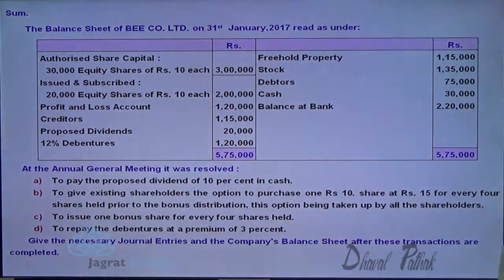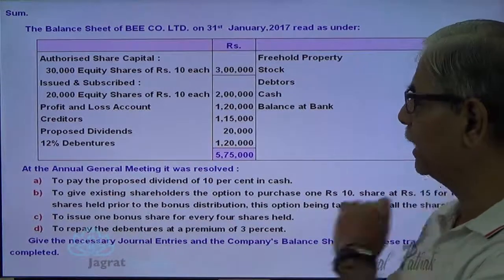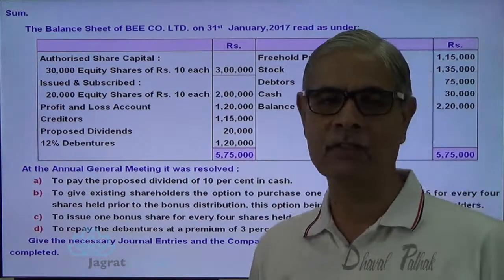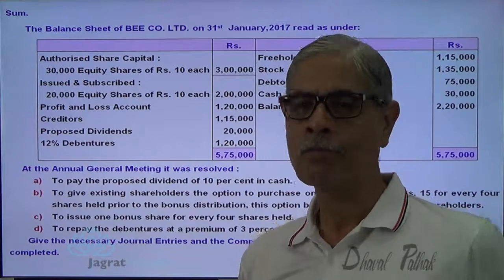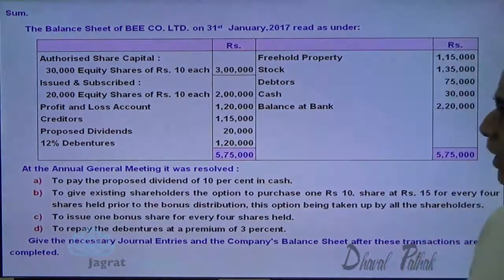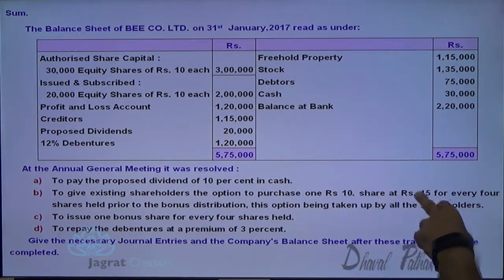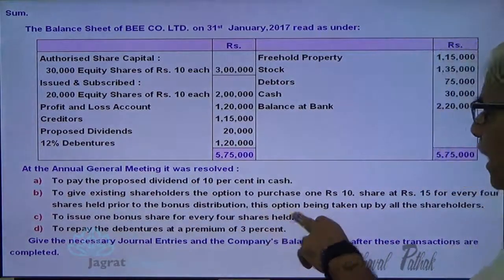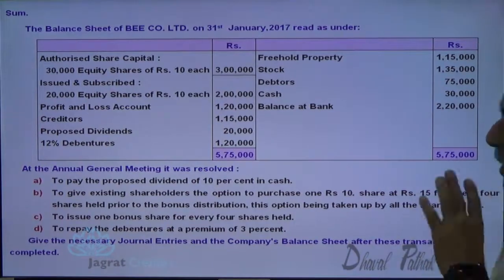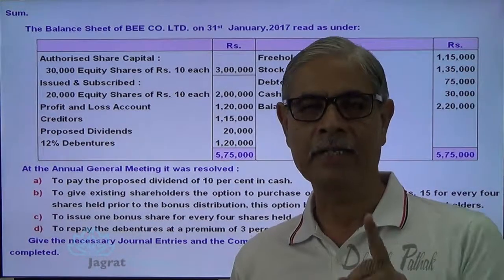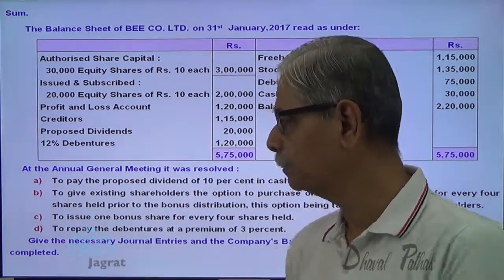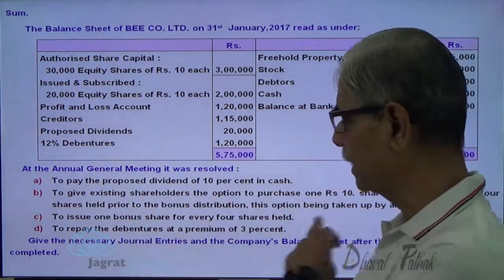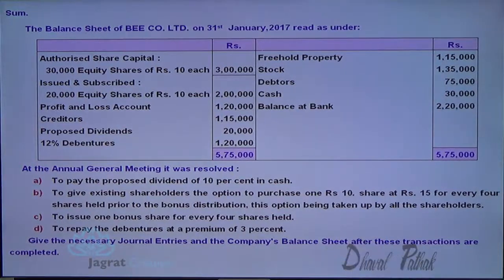At an annual general meeting it was resolved to: pay proposed dividend of 10% in cash — capital is 2 lakhs, 10% thereon is 20,000, and there is already an existing balance of proposed dividend of 20,000 to be paid. To give existing shareholders the option to purchase one ₹10 share at ₹15 for every 4 shares held prior to the bonus distribution, and this option is taken by all shareholders, so right shares are issued — one share for every 4 shares held. To issue one bonus share for every 4 shares held. To repay the debentures at a premium of 3%. Give necessary journal entries and complete the balance sheet.